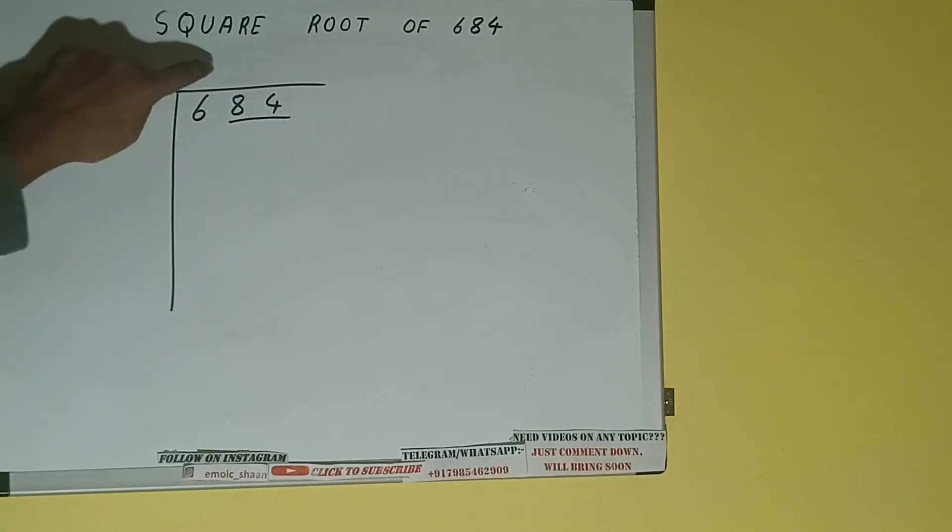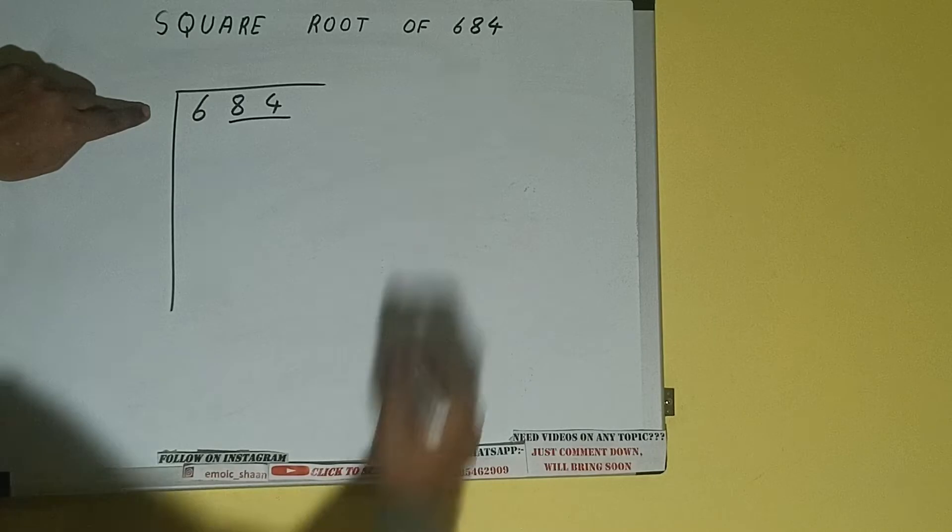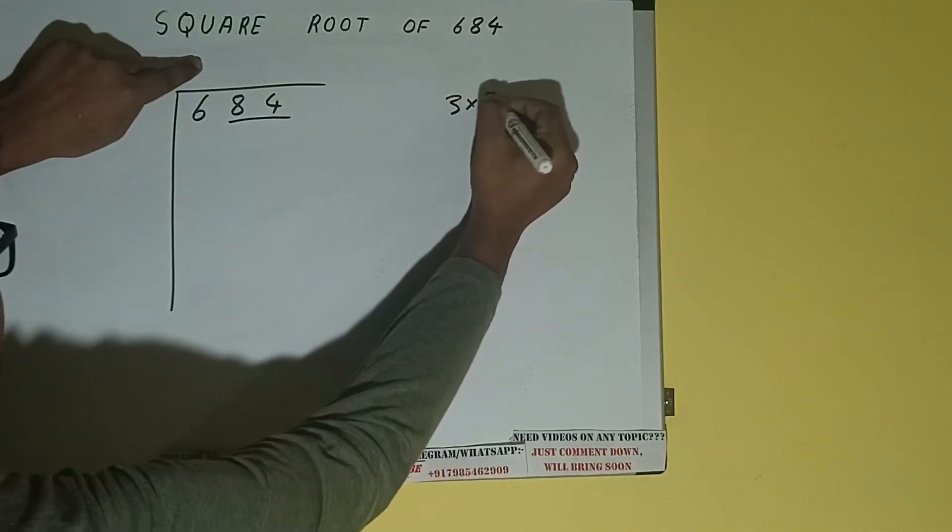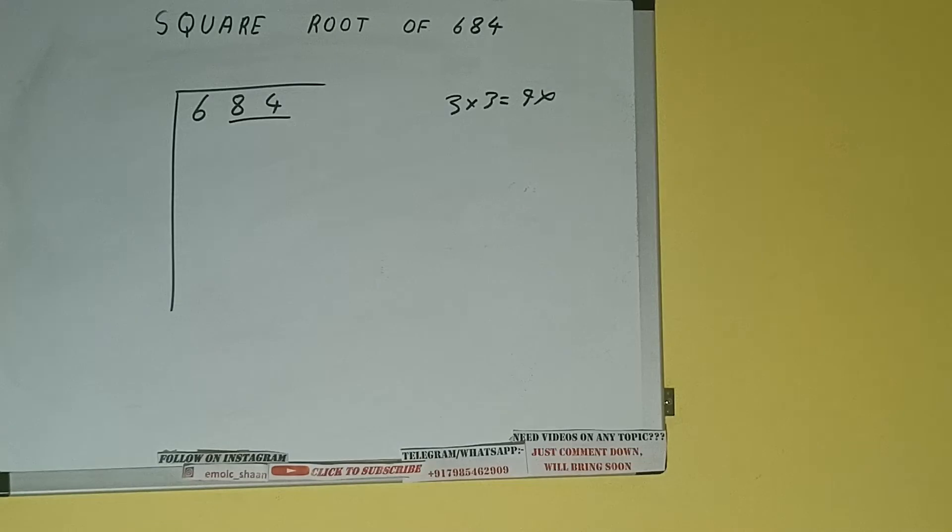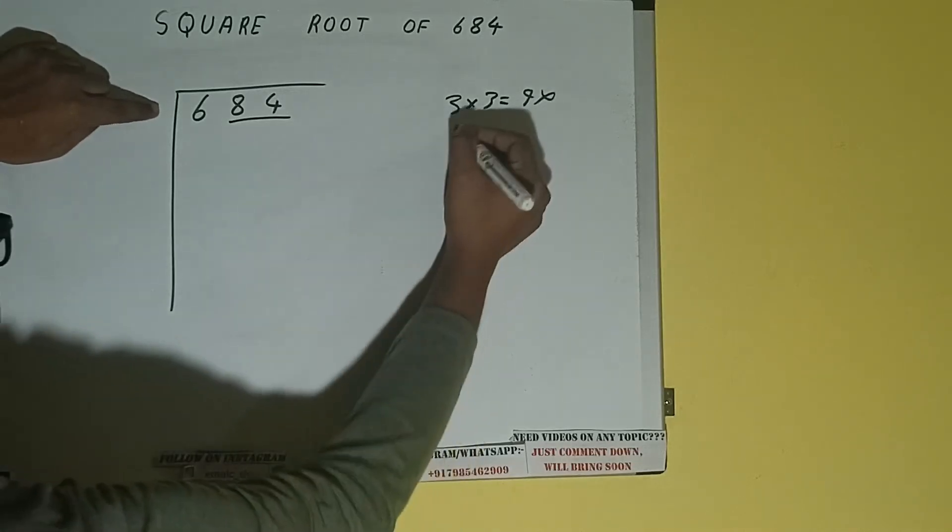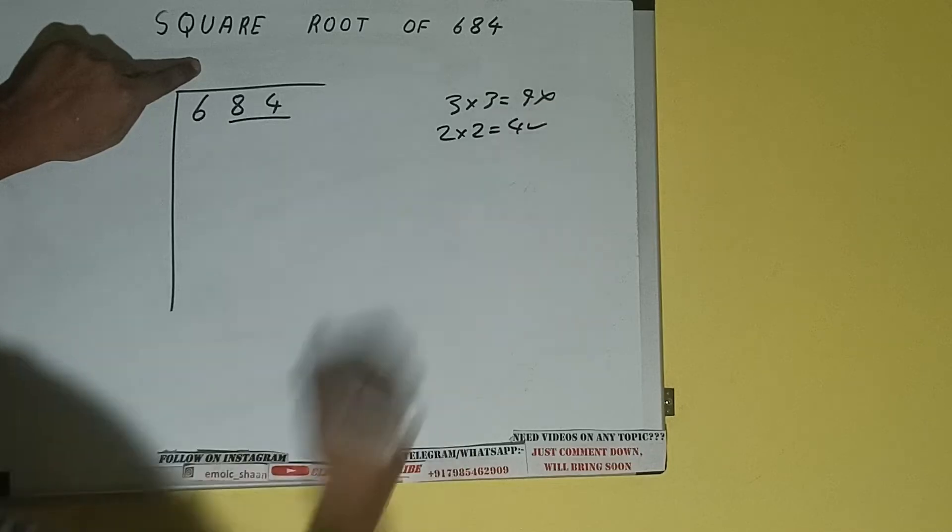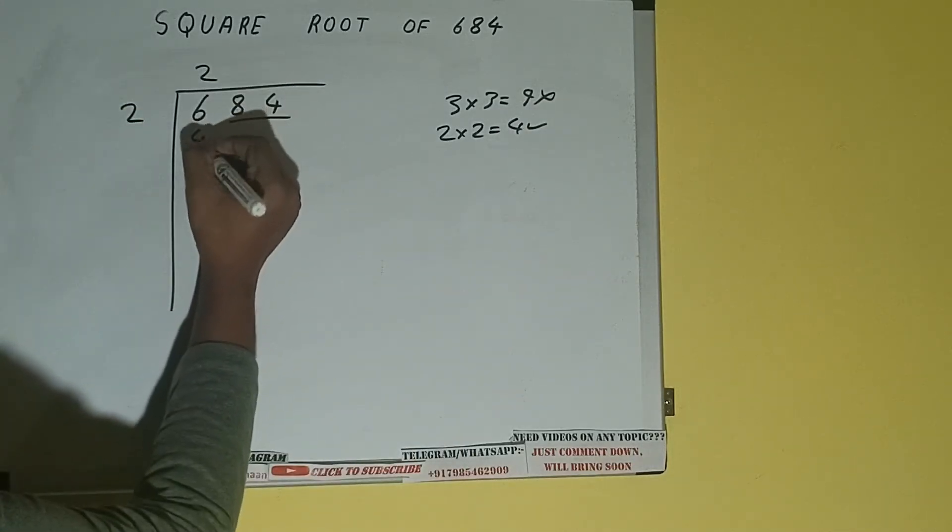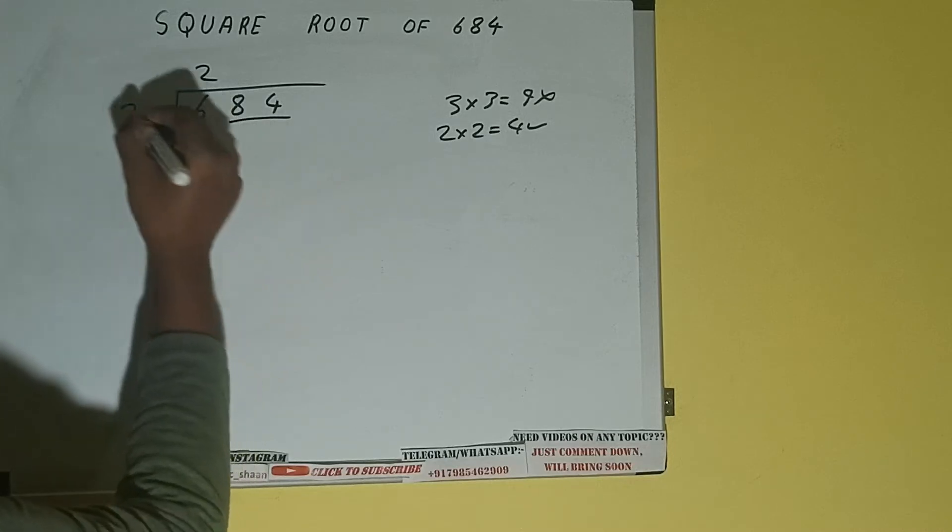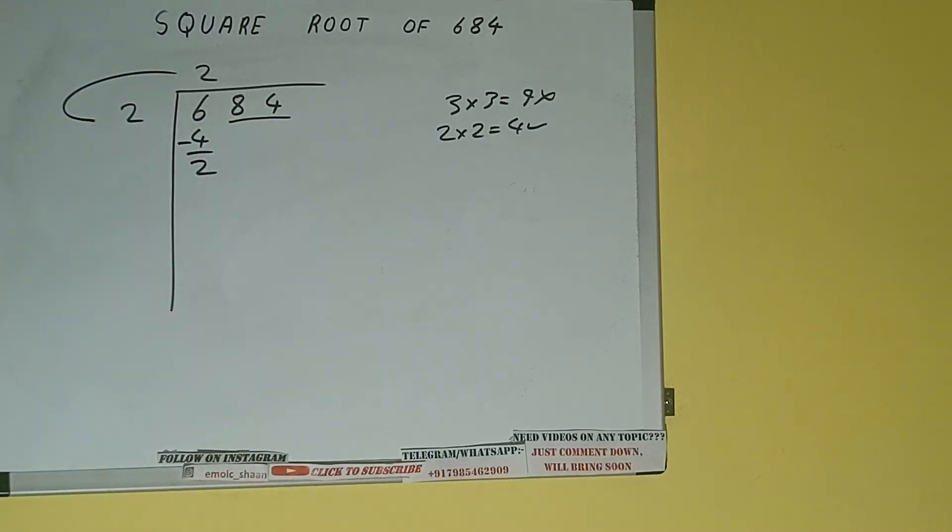The rule is: whatever number we write here, we have to write here also. So if we write 3 here and 3 here, it will be 9, which is greater than 6, so we cannot take it. If we write 2 here and 2 here, it will be 4, which is good to take. So 2 here and 2 here: 4. Subtract, 2 will be left. We did 2 into 2, so add both. So 2 plus 2 will be 4.